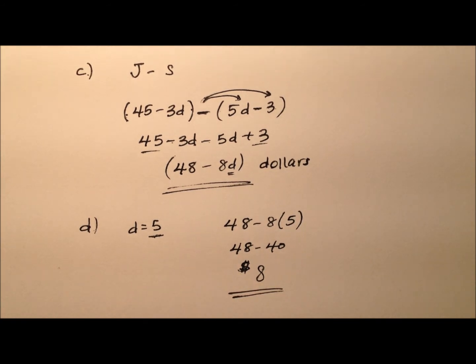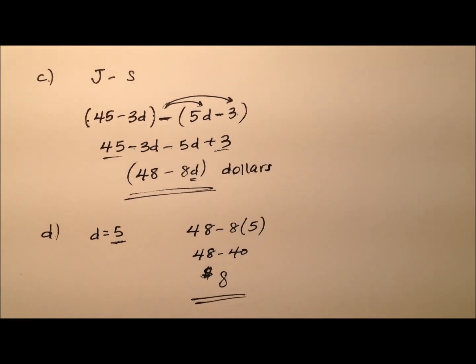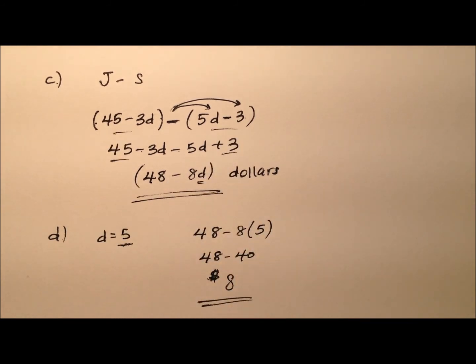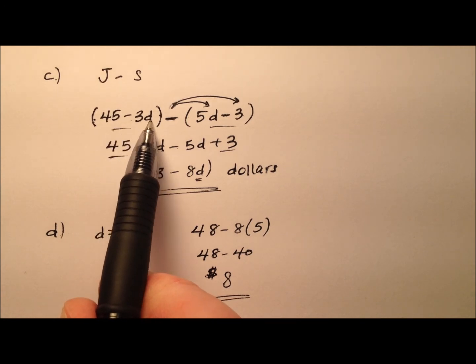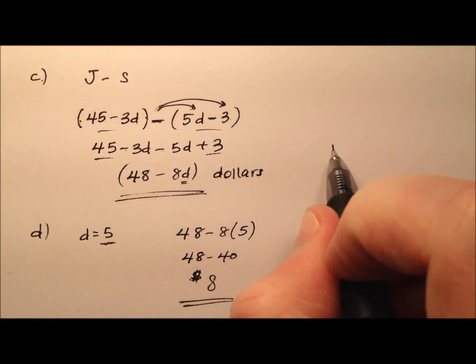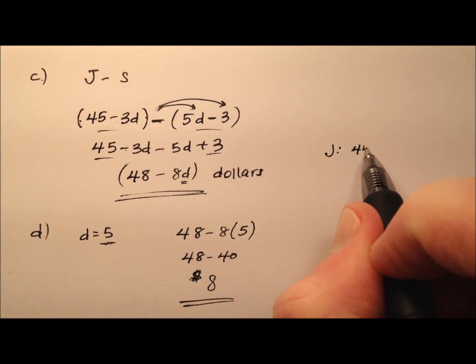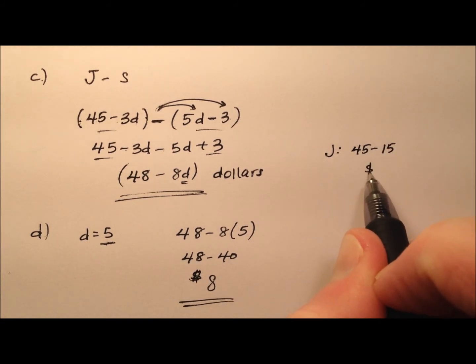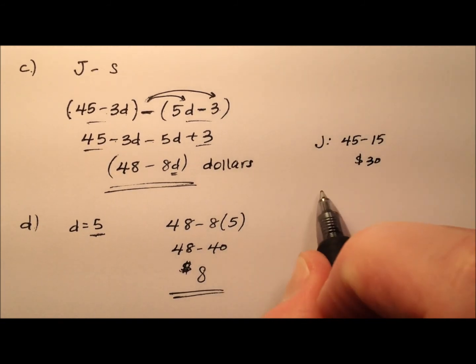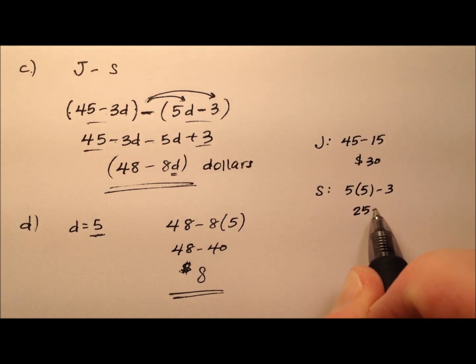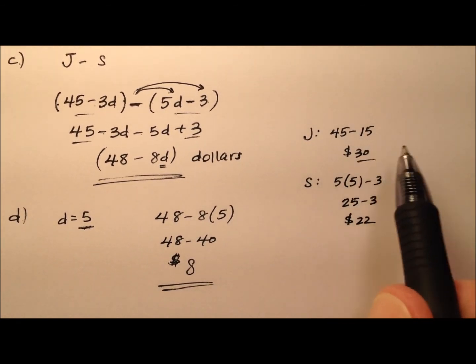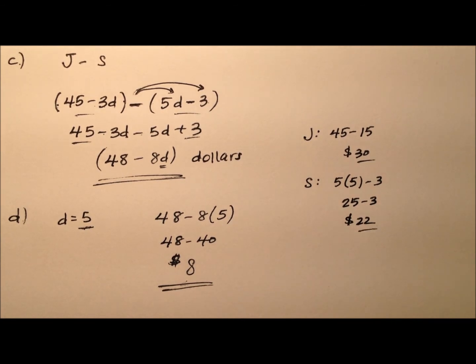Let's plug that 5 in for both Joe and Sue to verify it's $8 more. For Joe, 45 minus 3d is 45 minus 15, which is $30. Sue is 5 times 5 minus 3, which is 25 minus 3, so $22. Yes, $30 and $22 is $8 more.